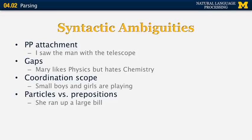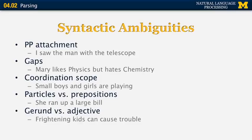There are many cases where a word can be considered as either a particle or a preposition. For example, 'she ran up a large bill' uses 'up' as a particle in the phrasal verb 'run up,' meaning she incurred a large bill. Whereas 'she ran up a large hill' uses 'up a large hill' as a prepositional phrase, with 'up' as the head of that phrase. Another example is the dual use of words as both gerunds and adjectives. In 'frightening kids can cause trouble,' 'frightening' can be an adjective modifying 'kids,' or a gerund meaning the action of frightening kids can cause trouble.